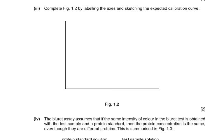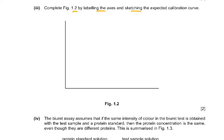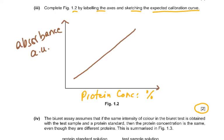Coming to part three of the question: complete Figure 1.2 by labeling the axes and sketching the expected calibration curve. Naturally, more protein means darker purple color, which means more light absorbed — so there is a positive correlation. The x-axis and y-axis must be labeled, and then you draw a line showing the positive correlation. As protein concentration increases from 1 to 5, absorbance also increases — a linear positive correlation. Two marks for labeling the axes and one mark for the graph.